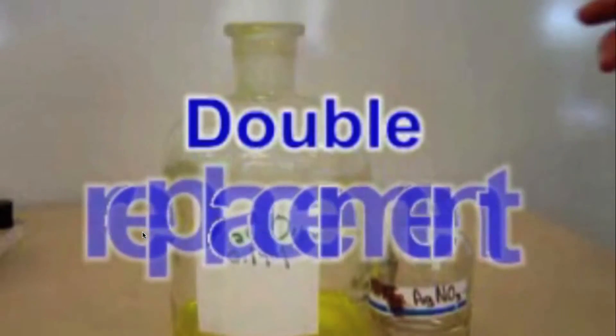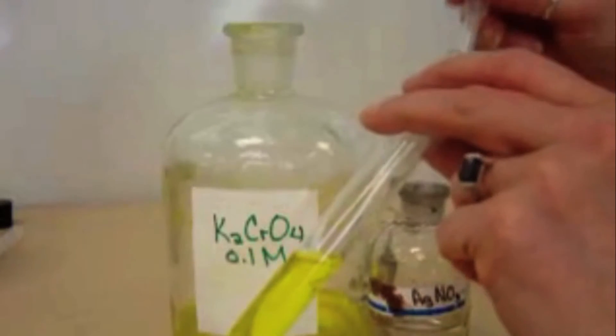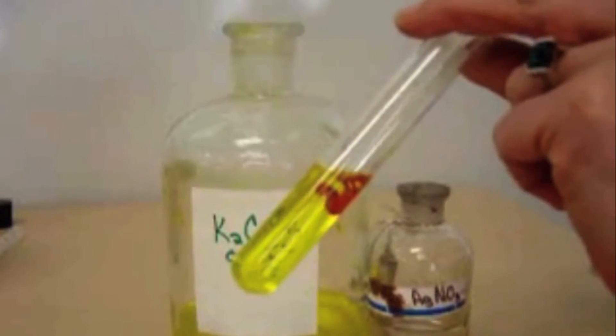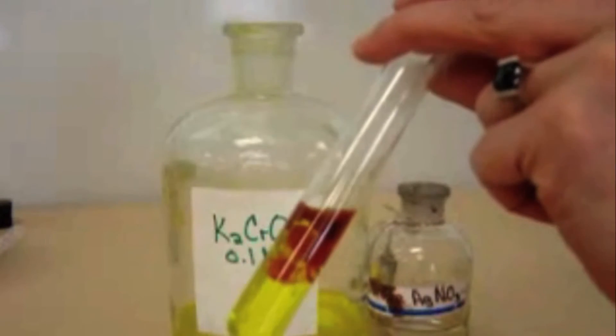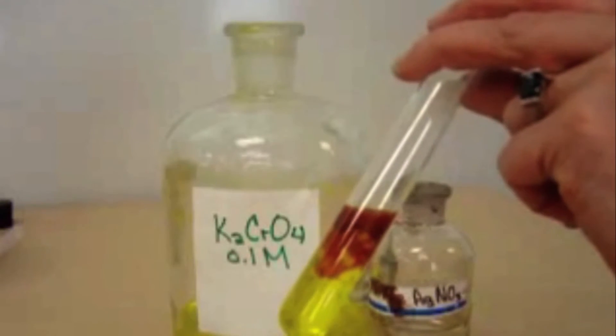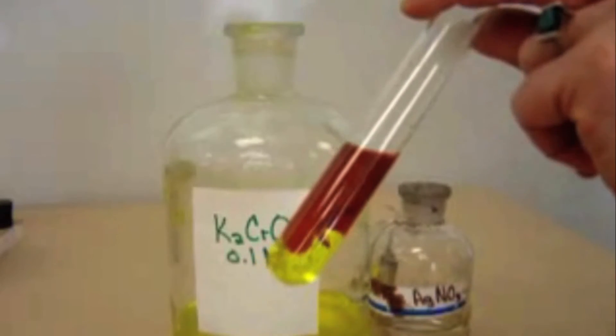We're going to do a double replacement reaction with potassium chromate and silver nitrate. Here's my potassium chromate, and I see that when I add silver nitrate to it, I am forming a nice red precipitate, and the precipitate is silver chromate. It's a double replacement reaction.